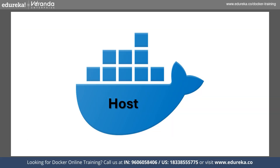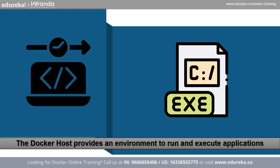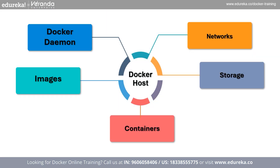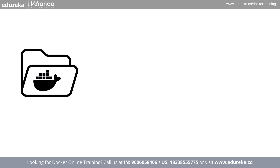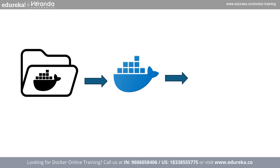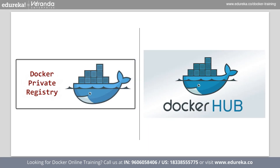The Docker host provides an environment to run and execute applications. It contains the Docker daemon, images, containers, networks, and storage. Docker registry is where Docker images are managed and stored. There are two kinds of registries in Docker: public registry — also referred to as Docker Hub — and private registry, which shares images within the enterprise.